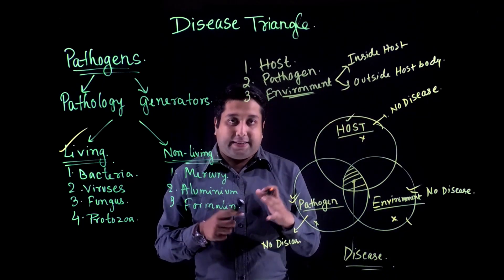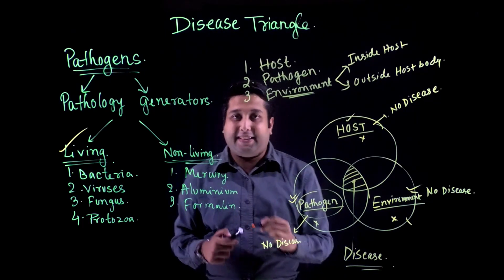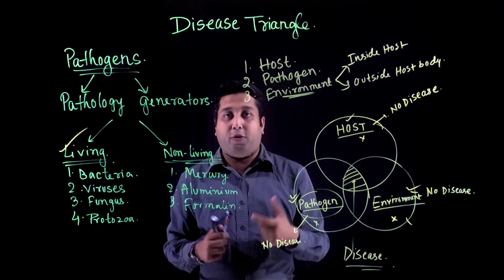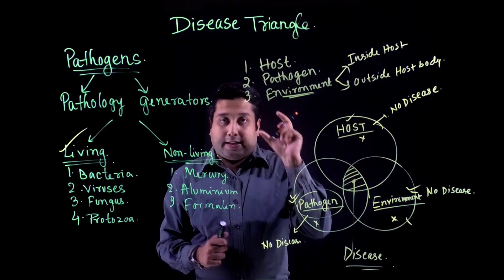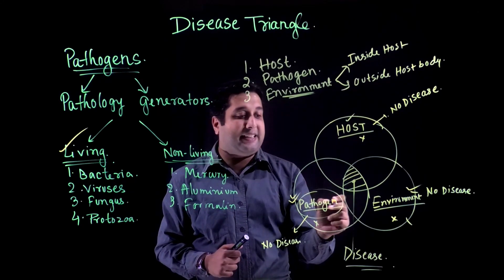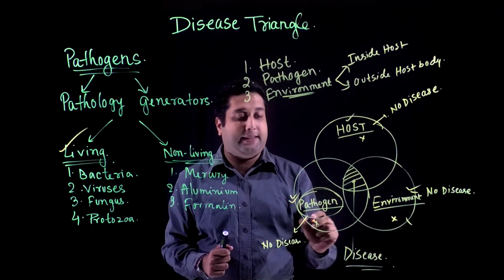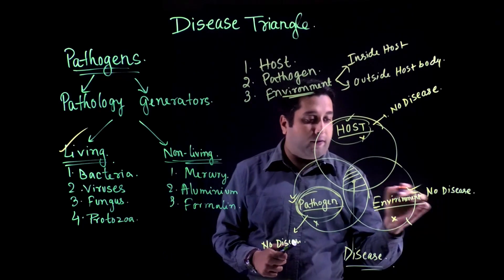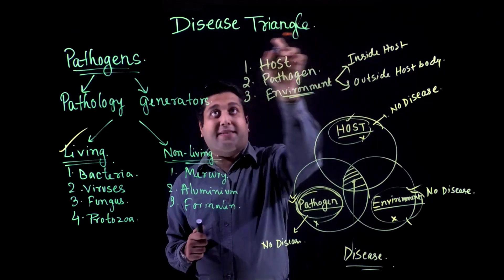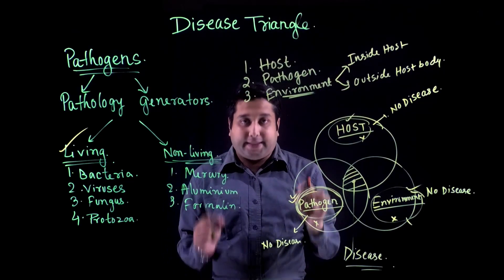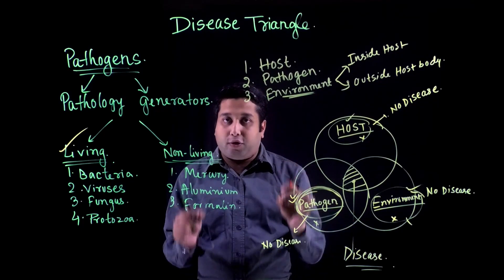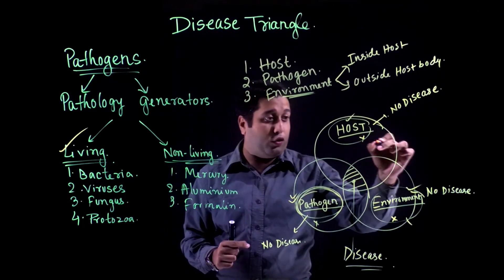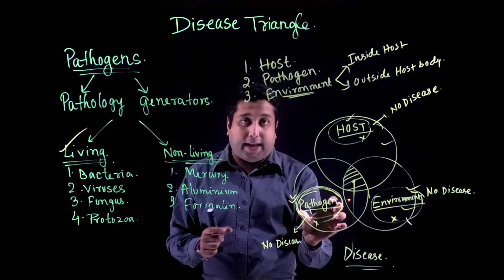So when we say that the pathogen has caused disease in us — for example, if we have tuberculosis, we say that the bacterium Mycobacterium tuberculosis caused the disease — we have to understand that Mycobacterium tuberculosis is the pathogen. We are only considering the pathogen factor and the host factor; we did not consider the environment. So by the disease triangle, we can clearly see that pathogens alone cannot cause any disease state in our body until and unless a proper host and proper environment are present along with it.